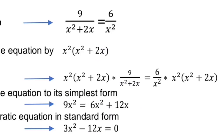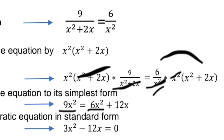Simplifying: x squared times x squared plus 2x times 9 over x squared plus 2x — you can cancel x squared plus 2x — gives 9x squared. On the right side, cancel x squared and x squared, giving 6 times x squared plus 2x, which is 6x squared plus 12x. Rewrite in standard form: transpose 6x squared to the left side to get negative 6x squared. So 9x squared minus 6x squared is 3x squared, and 12x becomes negative 12x on the left. So 3x squared minus 12x equals 0.